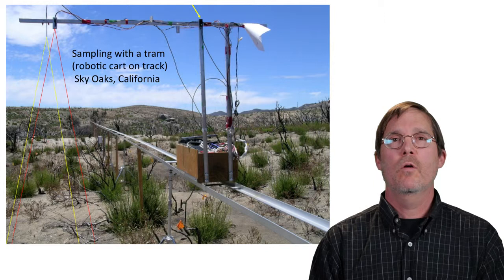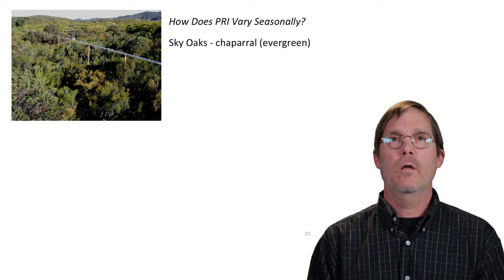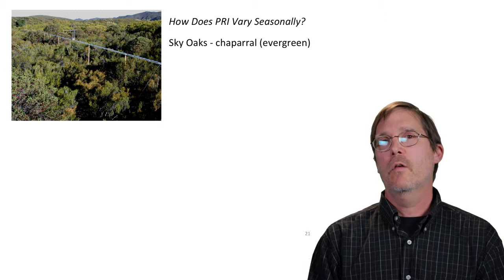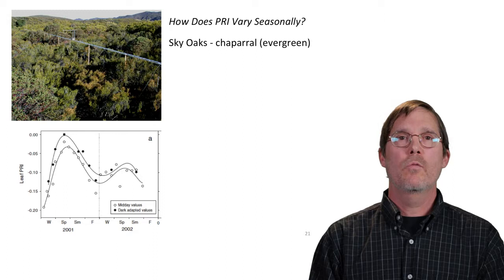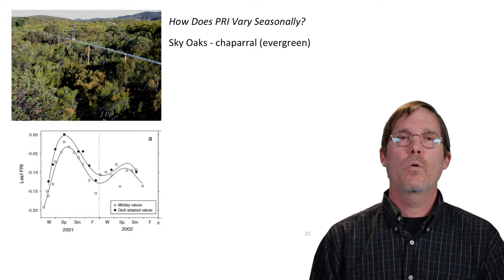We also have other instruments like a thermometer measuring surface temperature. We asked how PRI varies seasonally in this evergreen chaparral landscape. The results show a seasonal change in leaf PRI that corresponds to whole-canopy measurements from the tram. Two lines are shown: measurements in the dark state in the morning, and measurements at midday in the light state — with a subtle difference from morning to midday but a much bigger difference from season to season.